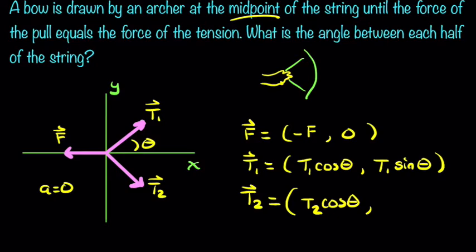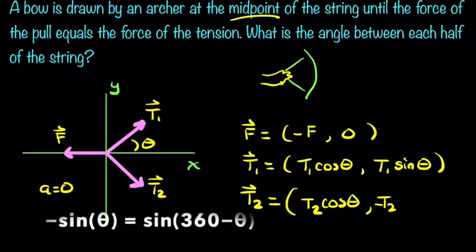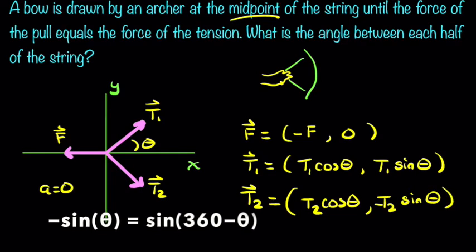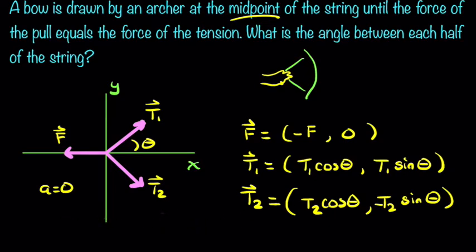And the Y component of T2 will be the magnitude of T2 times sine of 360 minus theta. And in this case, we would have to write 360 minus theta. Although we could just note that its direction on the Y axis is negative, and so we could just say negative, which would make it so that the sine of 360 minus theta would equal sine of theta. So we could just write sine of theta. We don't have to write 360 minus theta because of this negative. We put the negative in front of the magnitude.